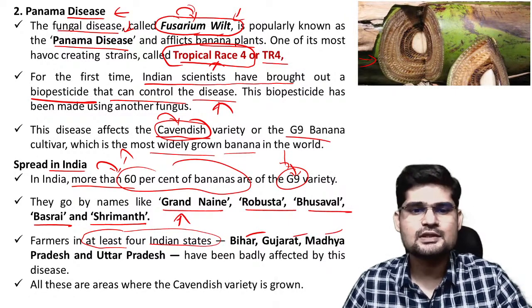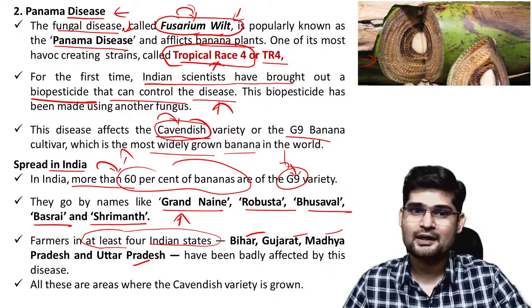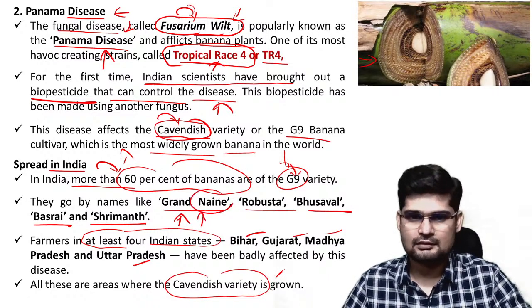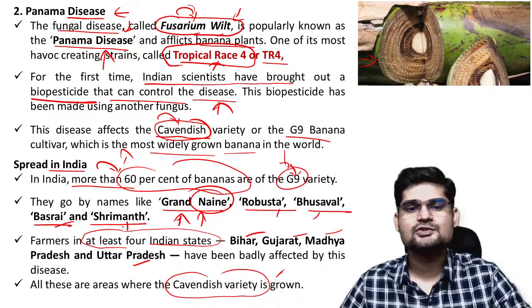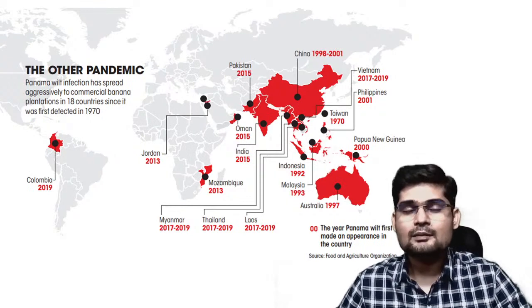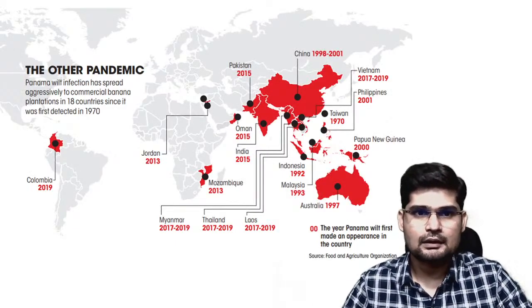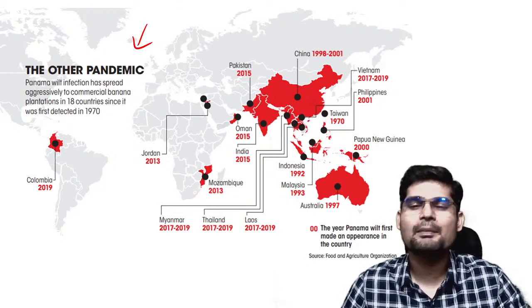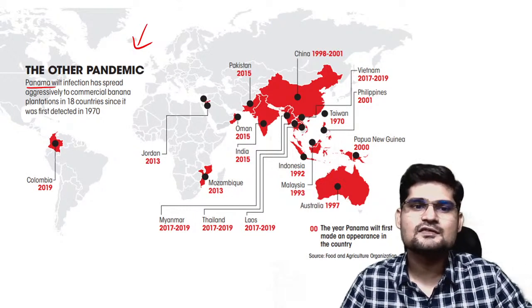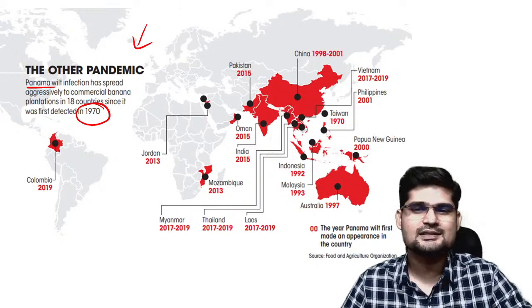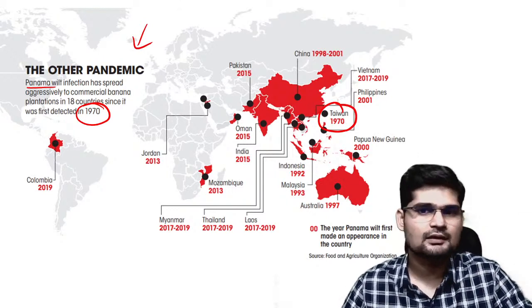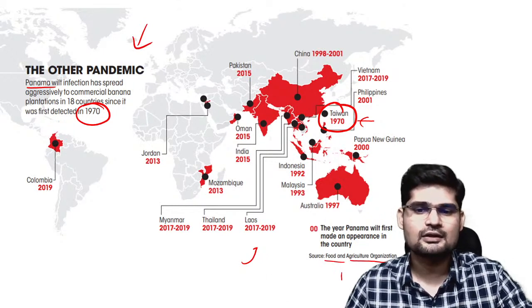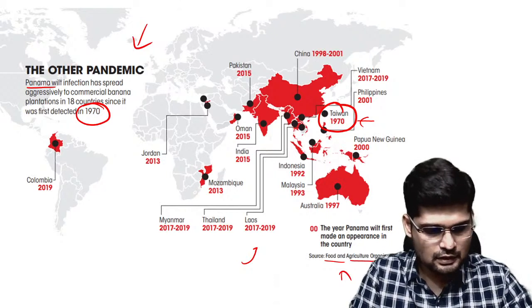Farmers in at least four Indian states — Bihar, Gujarat, Madhya Pradesh, and Uttar Pradesh — have been growing cavendish bananas and facing this panama disease. The spread is similar to a pandemic, now reaching almost 18 countries since 1970. Taiwan is identified as the origin source on the FAO map, from where it spread to different countries at different points in time. This report was given by the Food and Agricultural Organization.